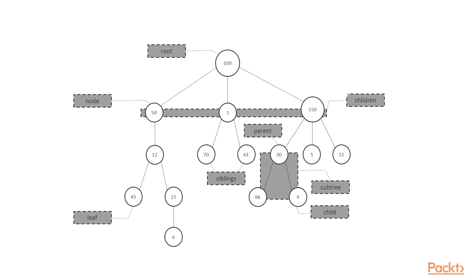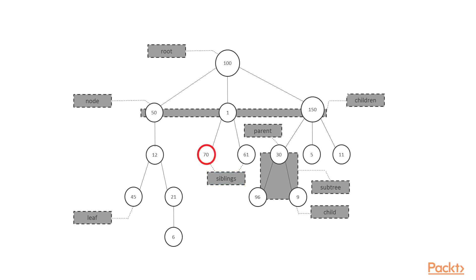For example, the parent element of node 1 is 100, while node 96 has node 30 as the parent. Moreover, each node can have any number of child nodes, such as three children — that is, 50, 1, and 150 — in the case of the root. The child nodes of the same node can be named siblings, as in the case of nodes 70 and 61.